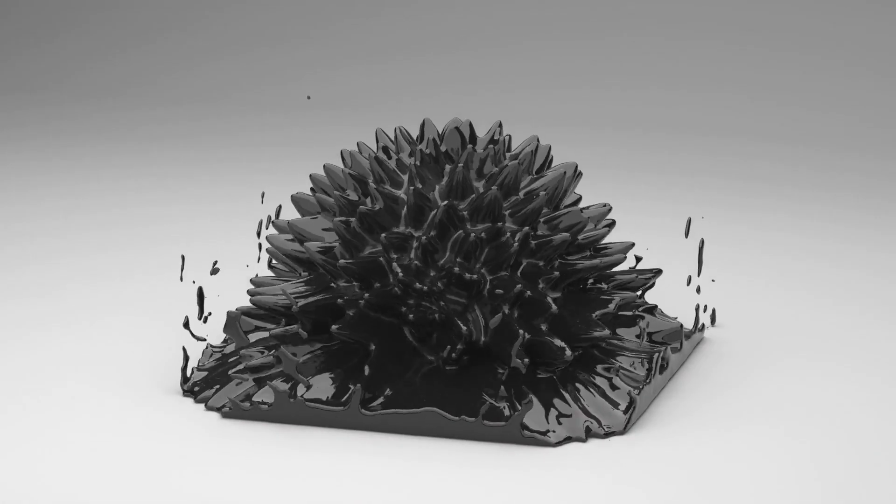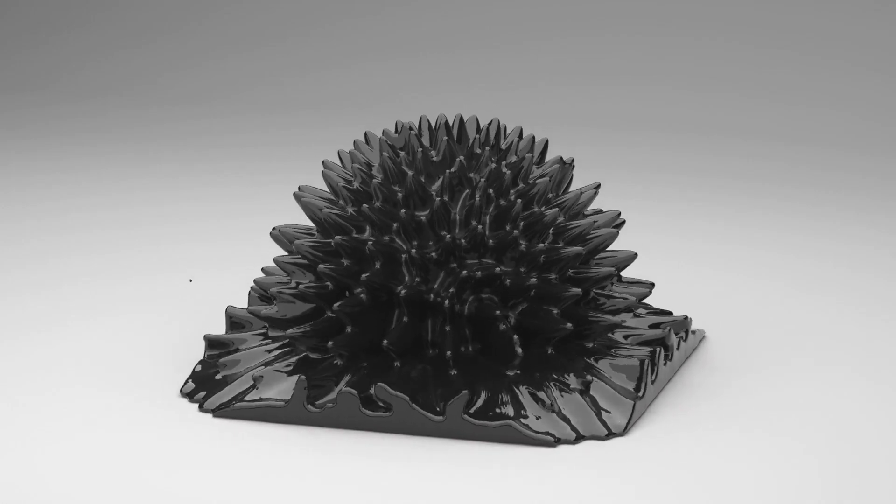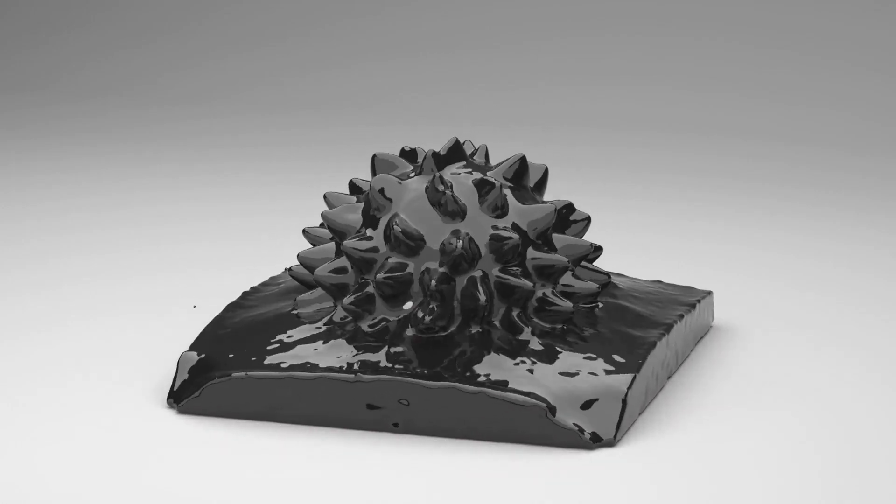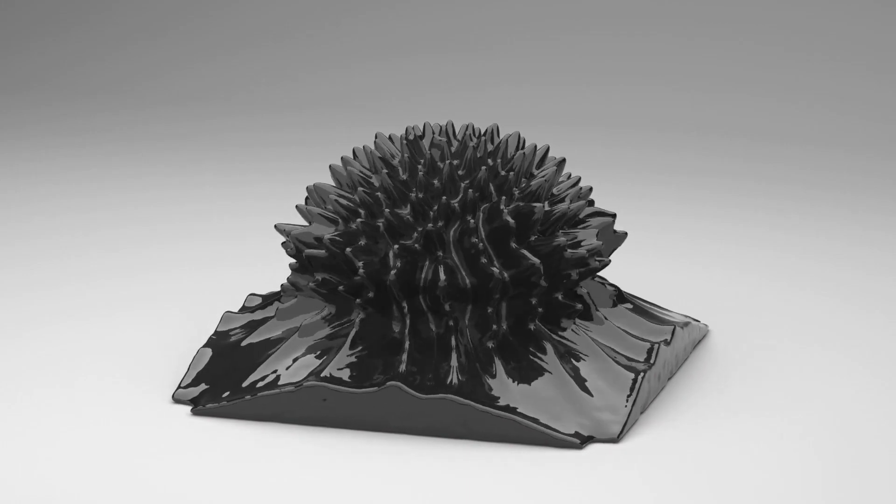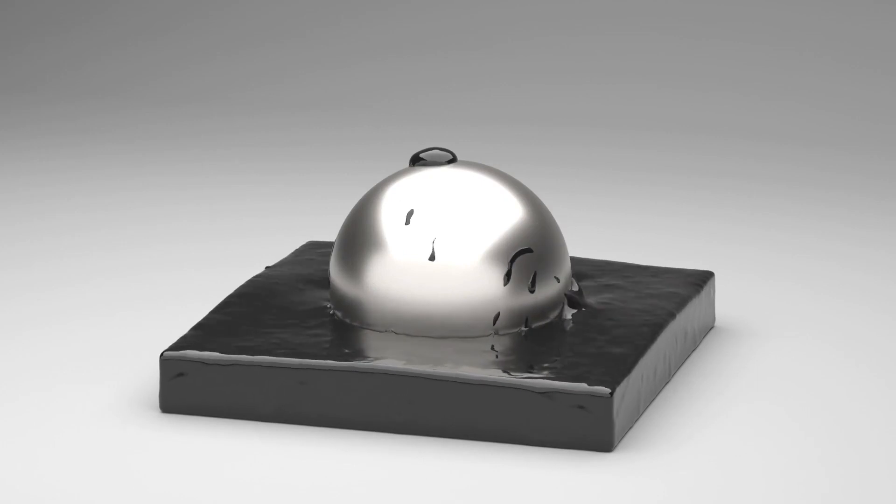In this example, a steel sphere is magnetized by a cylindrically shaped magnet located below. The steel sphere attracts the ferrofluid. During the simulation, the strength of the magnet is changed over time, resulting in varying fluid shapes.